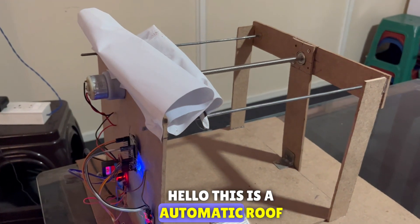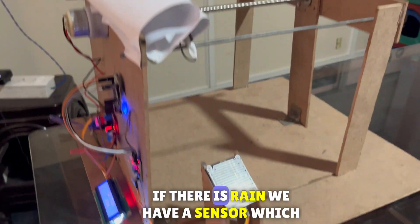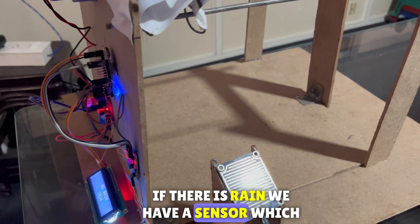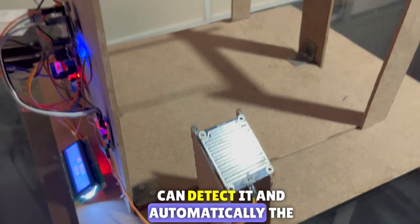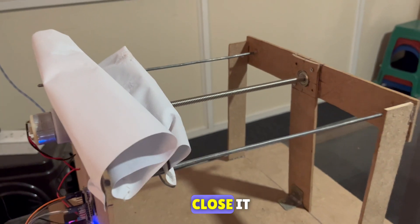Hello, this is an automatic roof controlled by rain. If there is rain, we have a sensor which can detect it and automatically the roof will close. When we say turned on, it is going to close it.